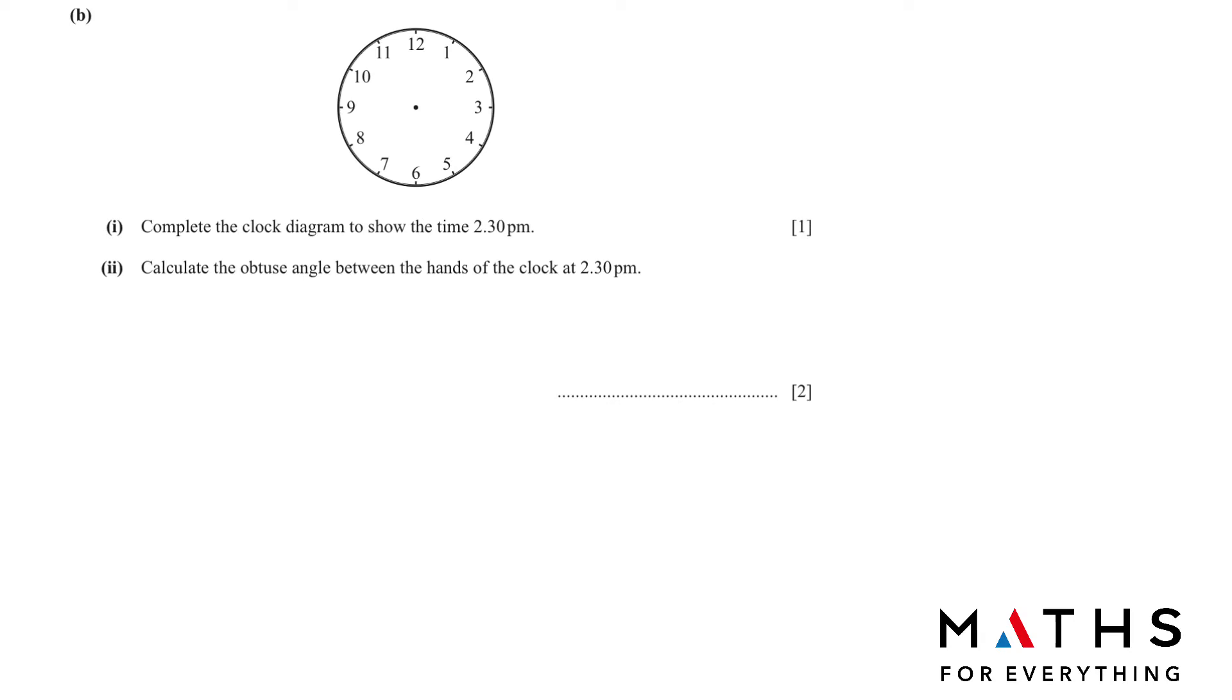Part B complete the clock diagram to show the time 2:30. I hope you all know how to draw this. When it is 2:30 it's not going to be exactly at 2. The hour hand will be in the middle between 2 and 3. And 30 minutes is exactly on 6.